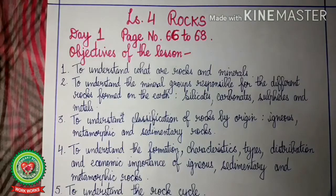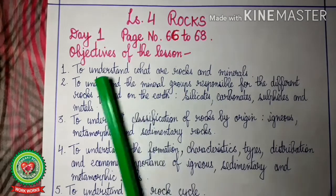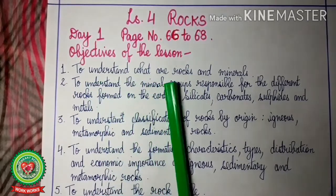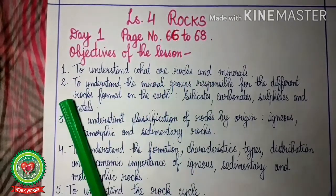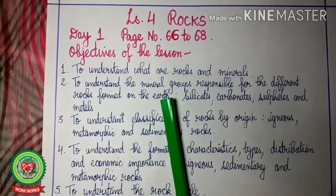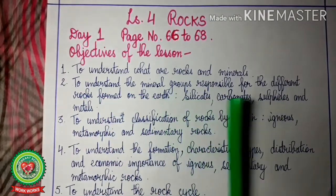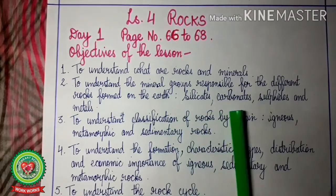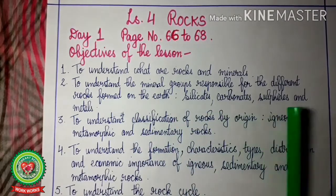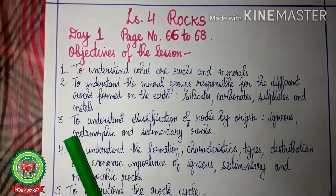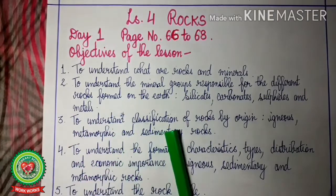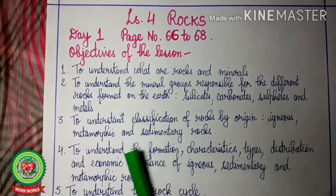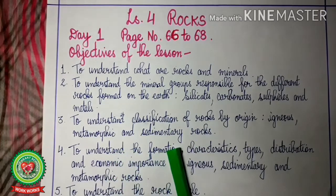First of all, let us see the objectives of the lesson. 1. To understand what are rocks and minerals. 2. To understand the mineral groups responsible for the different rocks formed on the earth — they are silicates, carbonates, sulphites and metals. 3. To understand the classification of rocks by origin: igneous rocks, metamorphic rocks and sedimentary rocks.